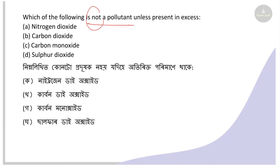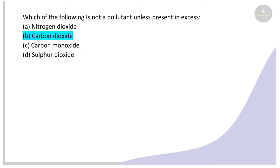Next: Which of the following is NOT a pollutant unless present in excess? Options: nitrogen dioxide, carbon dioxide, carbon monoxide, sulfur dioxide. The right answer is carbon dioxide — in normal amounts it is fine for our biosphere. However if the amount increases, it becomes problematic. Trees absorb carbon dioxide through photosynthesis.